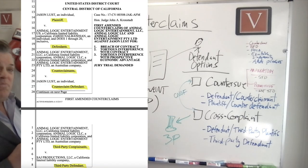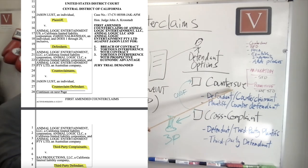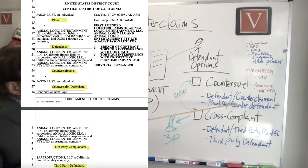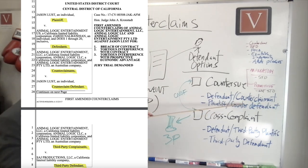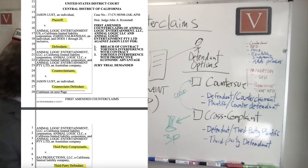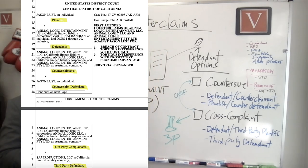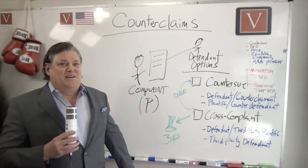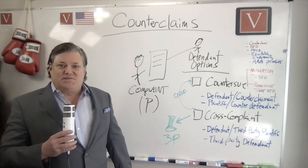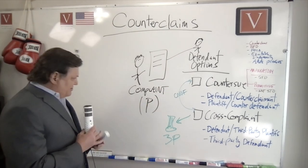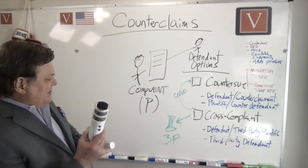So you have permissive counterclaims and you have mandatory counterclaims. The person who is counter-suing will become the counterclaimant — that's usually the term you see. And the plaintiff will now also become the counter-defendant. So both labels apply: plaintiff and counter-defendant. It gets kind of confusing when you're handling a lot of counterclaims and cross claims, but sometimes you've got to get them in there — you just have to roll with the punches.